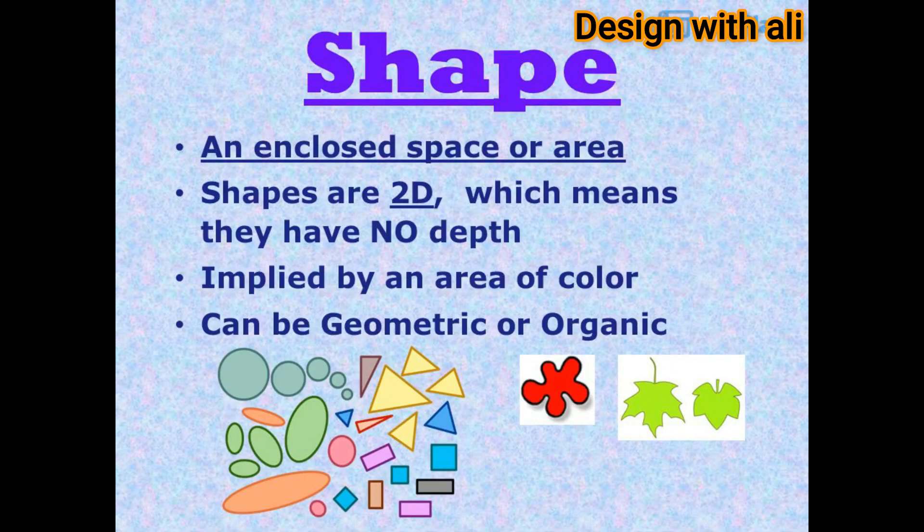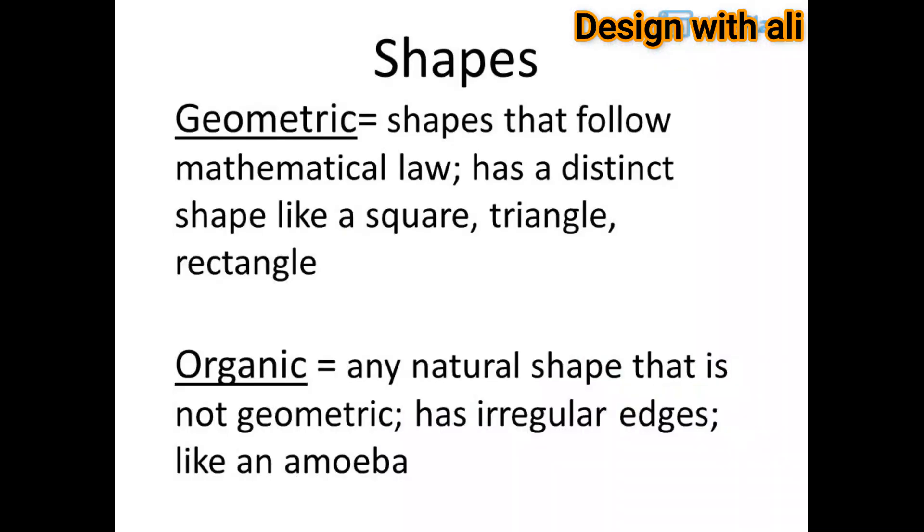Shape is an enclosed space or area. Shapes are 2D, which means they have no depth. They are implied by an area of color, and can be geometric or organic.